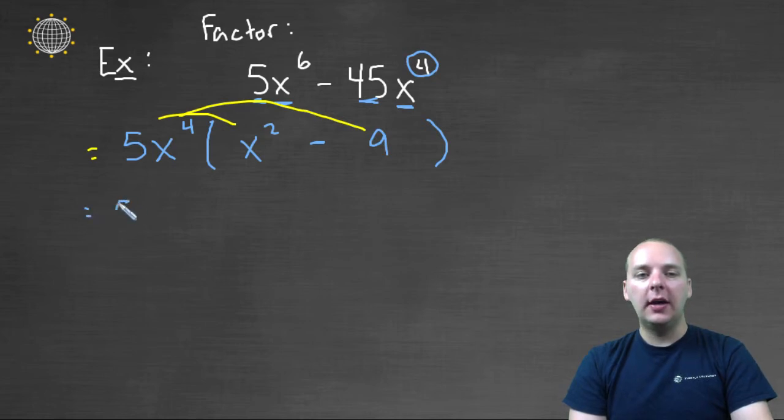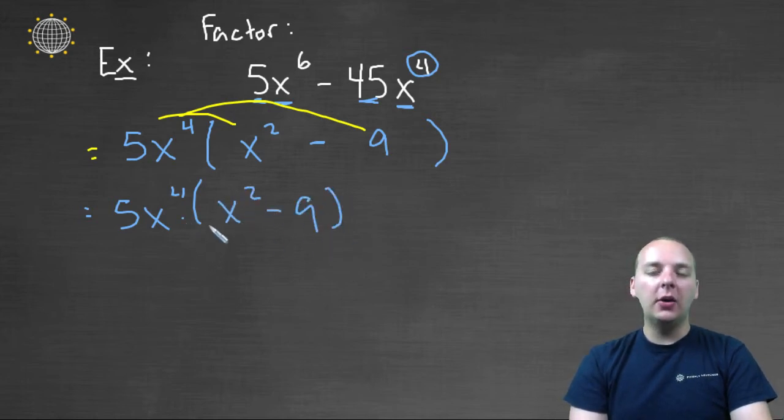So good job, I factored it. I've gotten five x to the fourth times x squared minus nine. But remember, I'm not going to quit on it. I'm not going to give up on it, or say that I'm done. I need to look at each of these guys, and make sure that they are irreducible, or make sure that you can't factor those any farther.